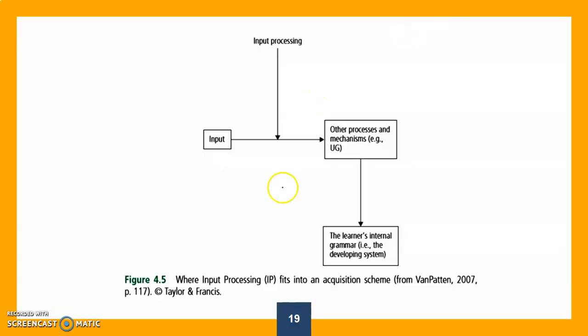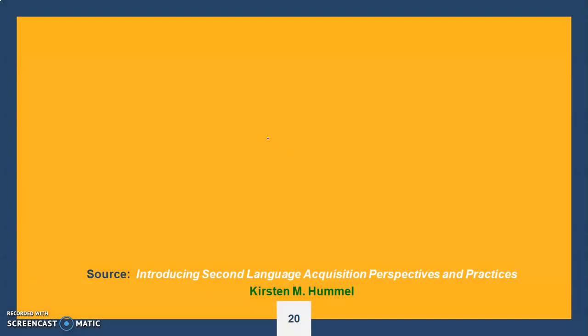This gives a model of where input processing fits in an acquisition scheme. We have input, and input involves other processes. These processes help us build the learner grammar - internal grammar or interlanguage. Input processing comes here to explain what is happening before other processes happen in the mind to produce language. This is it. We are done with our chapter. Thank you so much for listening, and I hope you paid attention to all the information.